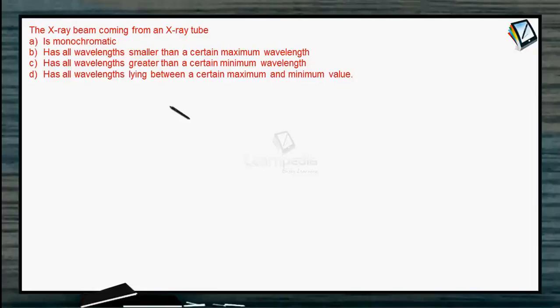The x-ray beam coming from an x-ray tube—is it monochromatic? Is it possible? No, it is not possible because we know that there are two kinds of x-rays: one is the continuous x-ray and the other one is the characteristic x-ray.